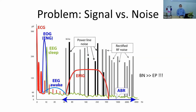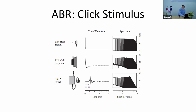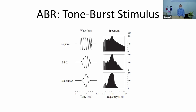We need to rely on advanced signal processing to record such small signals among large noise. Many techniques are implemented in NeuroAudio to allow non-sedated ABR recording. The most widely used ABR stimulus is the click — a wide-spectrum stimulus covering a broad range of frequencies. In its time waveform it is a very short rectangle. When delivered through the headphone, the diaphragm movement makes it biphasic.